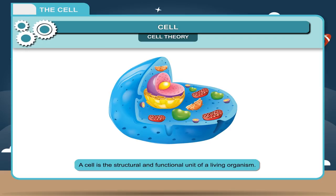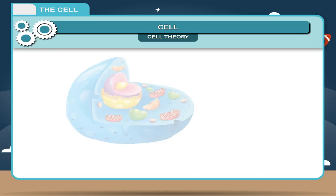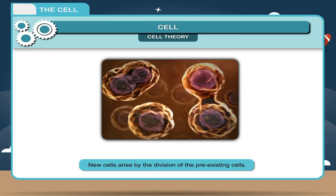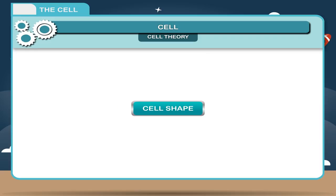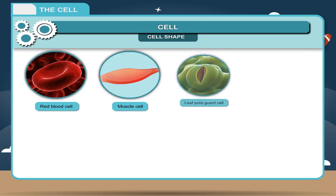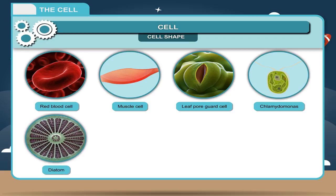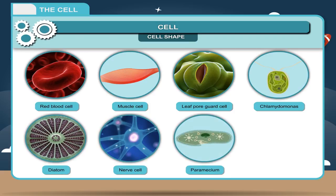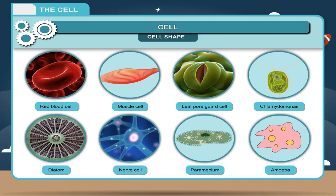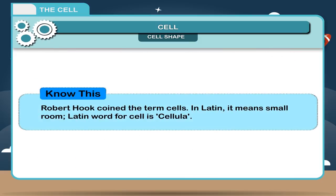Cell shape. Cells are of various shapes, which may be spherical, oval, elongated, or columnar. Amoeba is irregular in shape and it keeps on changing its shape. Chlamydomonas is spear-shaped. Note this: Robert Hooke coined the term cells. In Latin, it means small room. Latin word for cell is cellula.